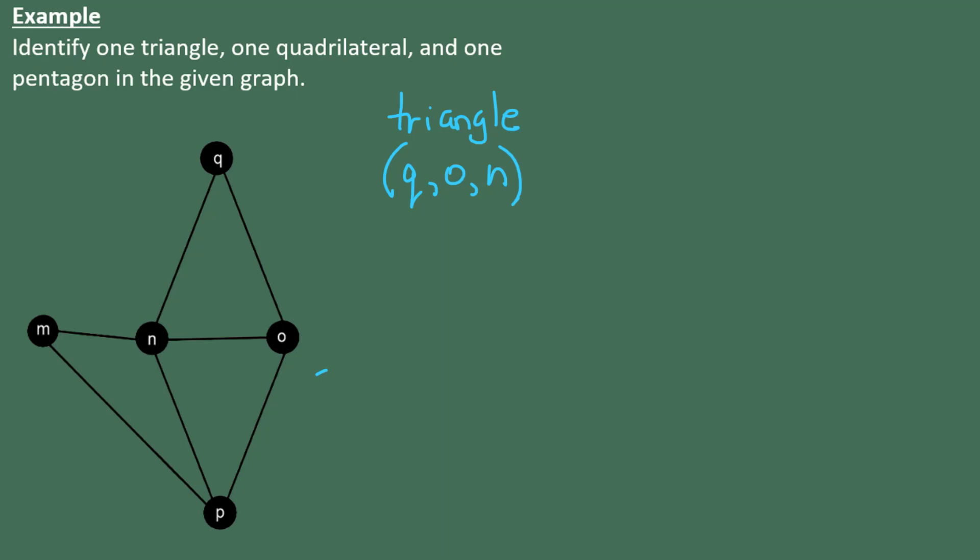Now let's find one quadrilateral. So a quadrilateral is going to be four vertices that are connected to each other in a sequence. So actually, M to N, N to O, O to P, and then back to M would be a quadrilateral, even though it looks like the shape of a triangle. Because in graph theory, we're not talking about the shape, just what the connections are. So I'm going to list quadrilateral M to N, N to O, O to P, and then back to M again. Now another person may have listed the quadrilateral Q, N, P, O, but we were only asked to list one of them. So either one would be fine.